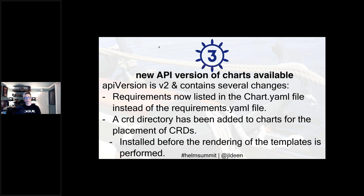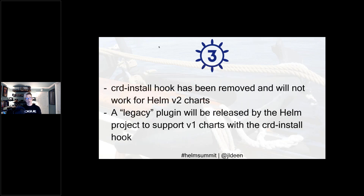There have been changes to CRDs as well. Remember Helm 2 predated CRDs and RBAC, so in Helm 3 we had to consider how to handle CRDs. A `crds` directory is now added to your charts directory where you can place CRDs that will be applied prior to rendering your templates. If you rely on install hooks, be aware that the CRD install hook has been removed. You can still use v1 charts, but you'll need a legacy plugin to support v1 charts with the CRD install hook since Helm 3 won't recognize it.